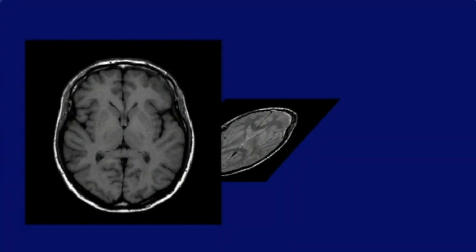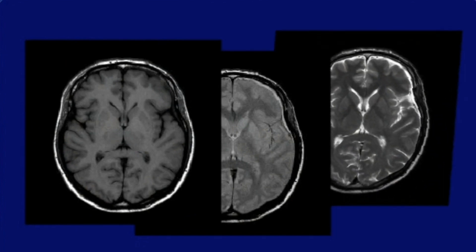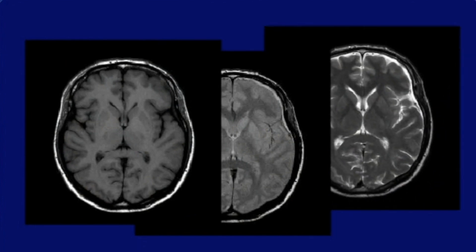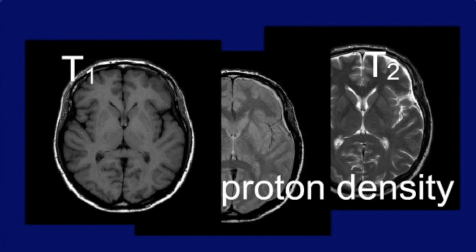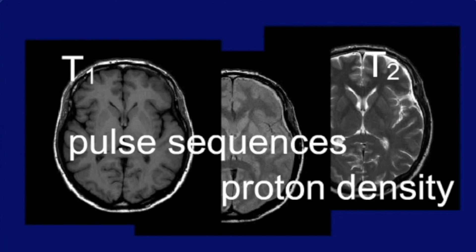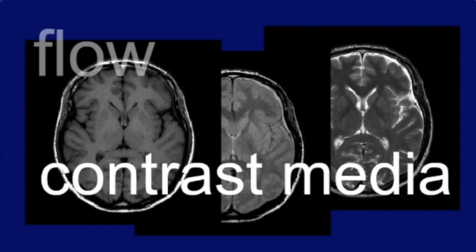Now, we've already heard about many parameters that influence the MR image: T1, T2, proton density, pulse sequences, TR and TE. But there are more, for example, contrast media and flow.